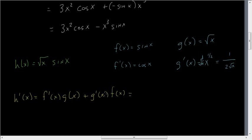f prime of x, in that case, is cosine of x. g of x is root x, plus. And we have g prime, which is 1 over 2 root x, times f, which is sine of x.